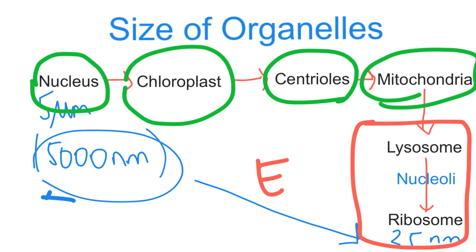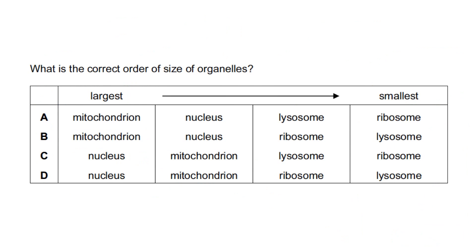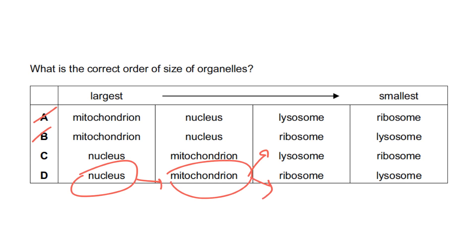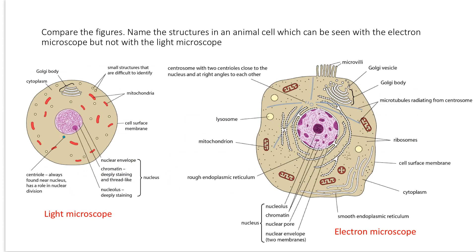Let's check out a question on the correct order of organelle size. Use the elimination method: both A and B start with mitochondrion, while C and D start with nucleus. Since the nucleus is larger than mitochondria, eliminate A and B. Then, between lysosome and ribosome, we know lysosomes are larger than ribosomes, so that gives us the correct answer.